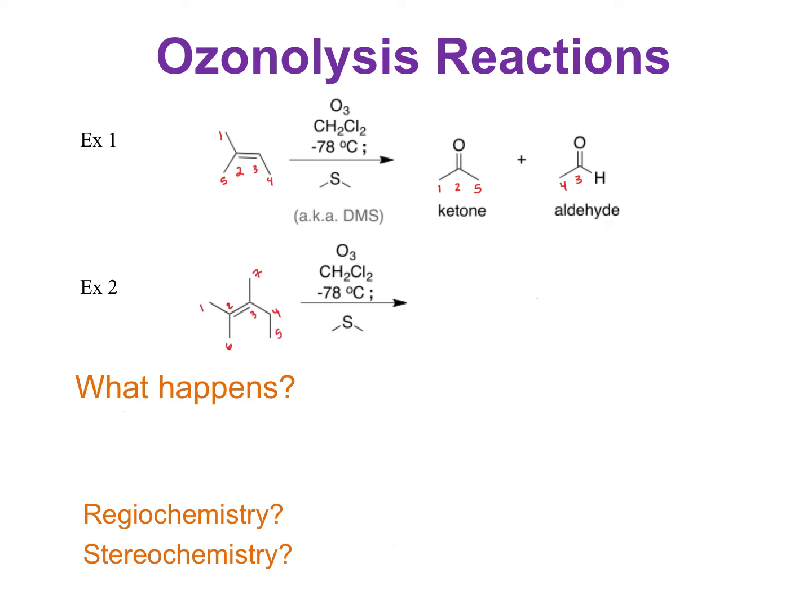For example, if we look at this next example we've got a double bond here. The kind of product is going to come from splitting it here. When it breaks you basically take the two pieces and add oxygens to the end. In this case now we have two ketones because if you look at the double bond each side of that double bond had two carbons, whereas the one above on carbon three there was a hydrogen there.